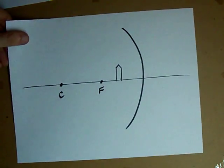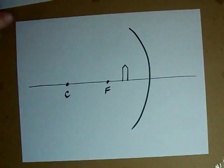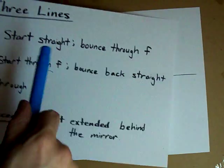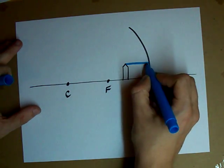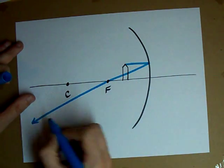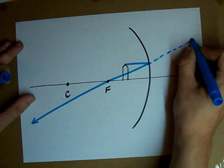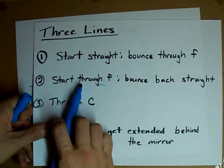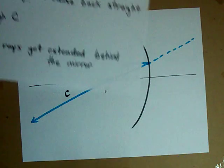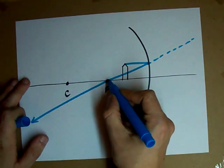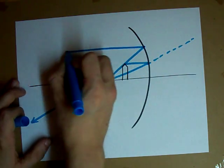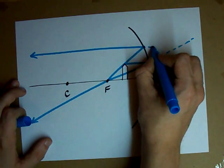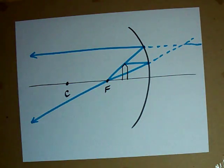Do this for the very last case that you could encounter. Start out straight, bounce through F. Start out straight, bounce through F. Don't forget to extend that backwards. Start through F, then bounce back straight. Now F is over here, so I've got to start at F, go through the pencil tip, and then bounce back straight, as requested. Extend that backwards.